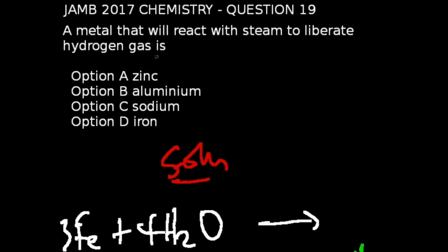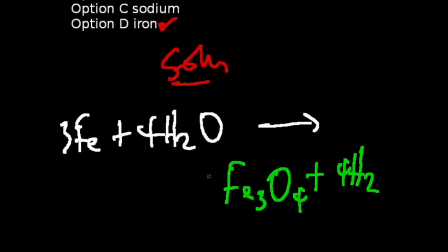Question 19 of the JAMB 2017 chemistry exams: A metal that will react with steam to liberate hydrogen gas is... The correct answer to this question is option D, which is iron. Look at the equation below - iron reacts with steam to have hydrogen gas as a product.